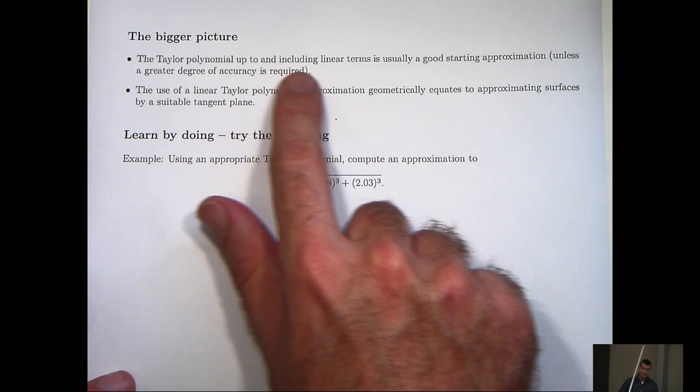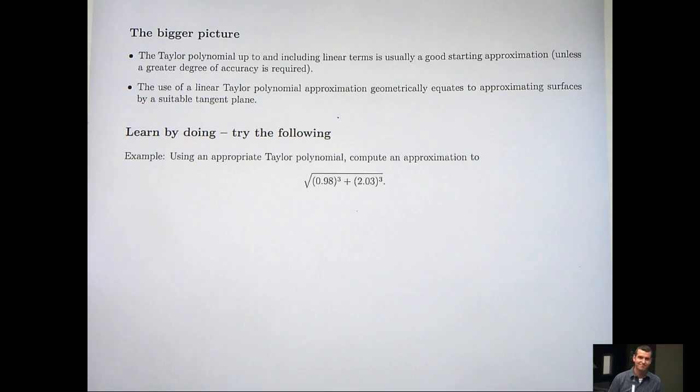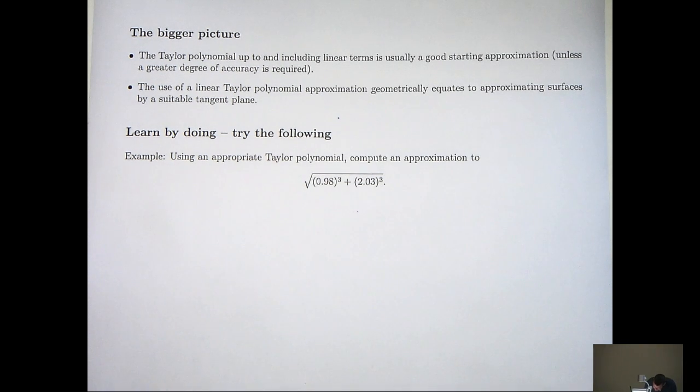The Taylor polynomial up to and including linear terms is usually a good starting approximation, unless a greater degree of accuracy is required. And you may think, what's the geometric significance of these Taylor polynomial approximations? Well, basically what we're doing is think of the graph of a function of two variables being a surface. What we're doing when we use the Taylor polynomial approximation, we're approximating the surface by a tangent plane.